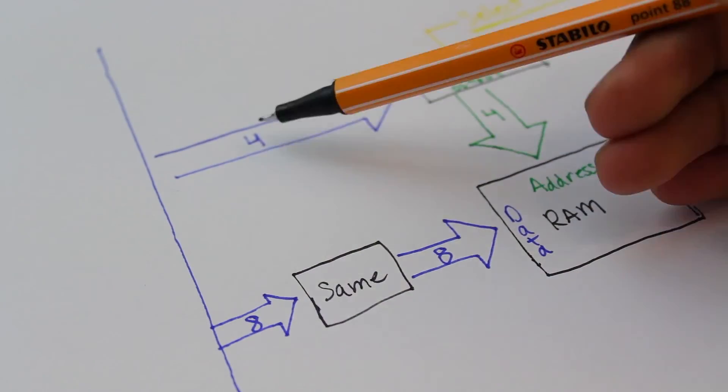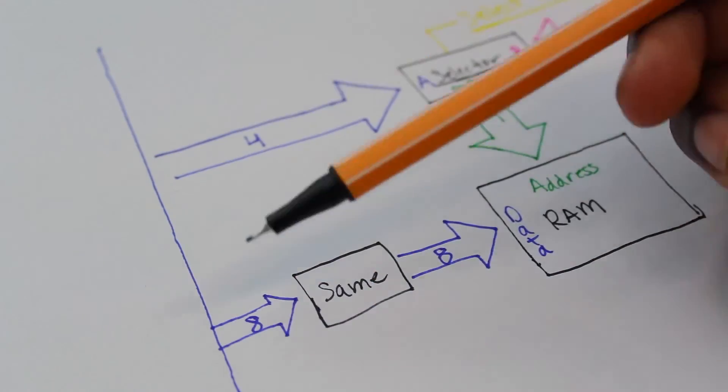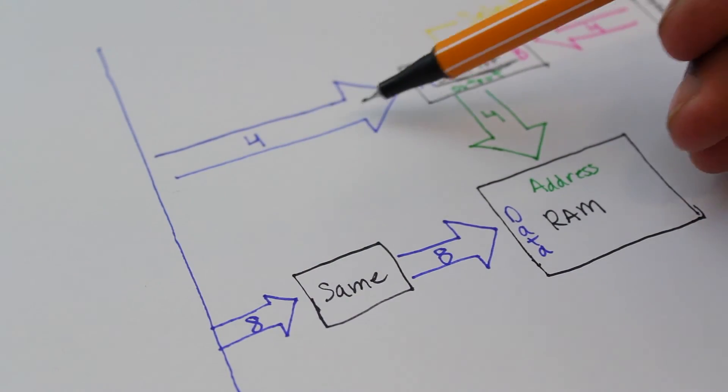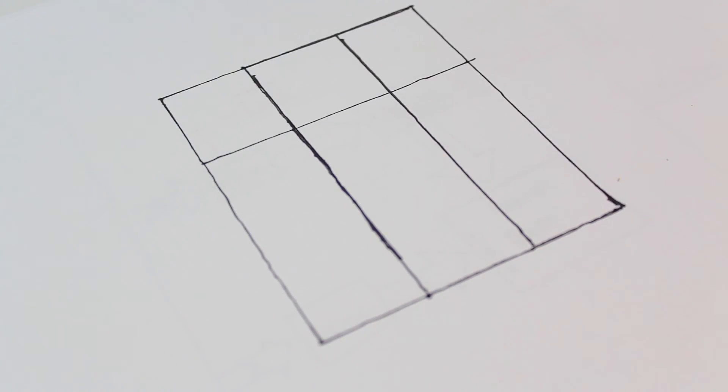Now, the problem is obvious here. We have an eight-bit bus, but we need 12 bits of information, four bits for the address and eight for the actual data. The solution is that we use two different clock cycles.